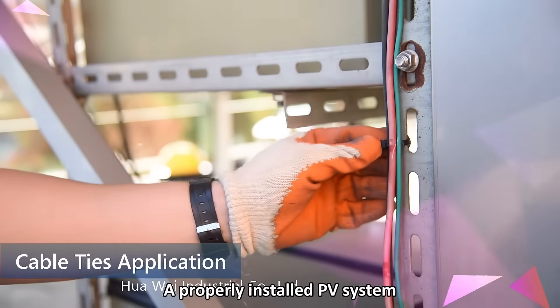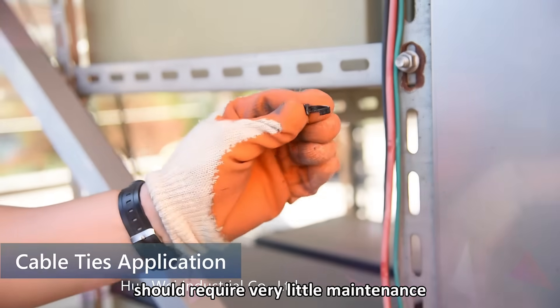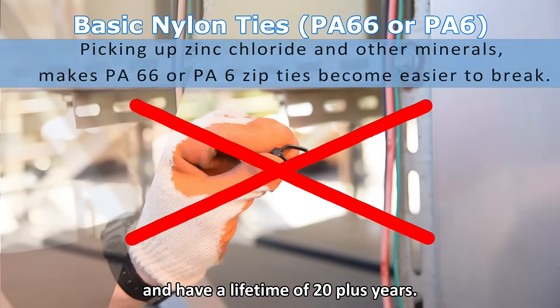A properly installed PV system should require very little maintenance and have a lifetime of 20 plus years.